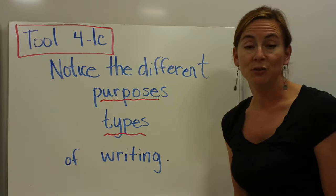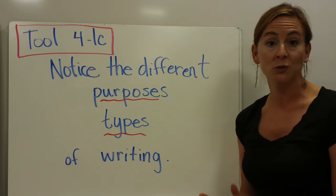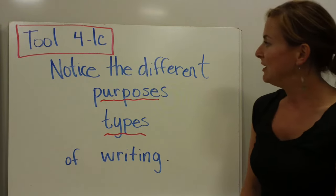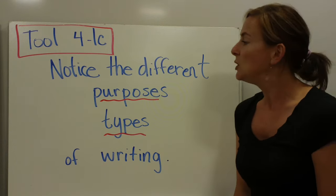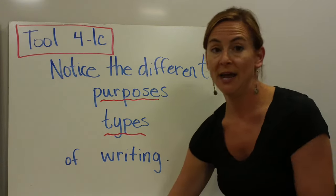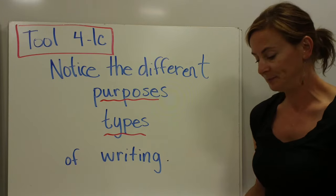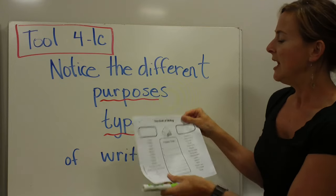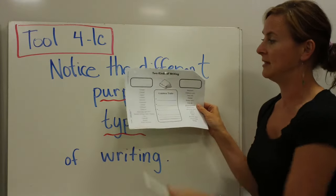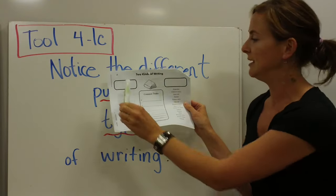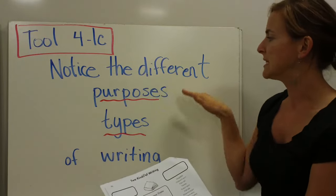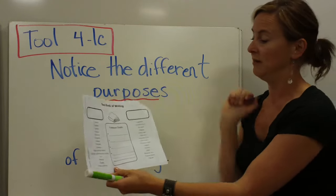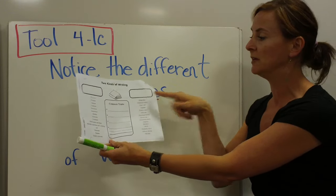I'd like you to move on to the next page in what will go in your toolbox, and that's going to be 4-1c. If you turn to that page, you will see that expository and narrative are listed there. On the left-hand side, you will see that bubble again, and I would like you to copy the word expository. I want you to notice the different purposes and types of writing when you have expository versus, and over on the right-hand side, you can copy the word narrative.